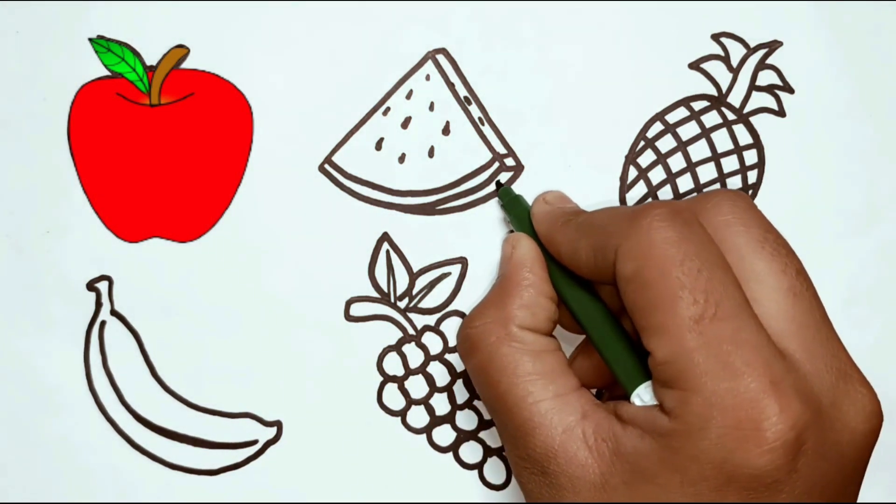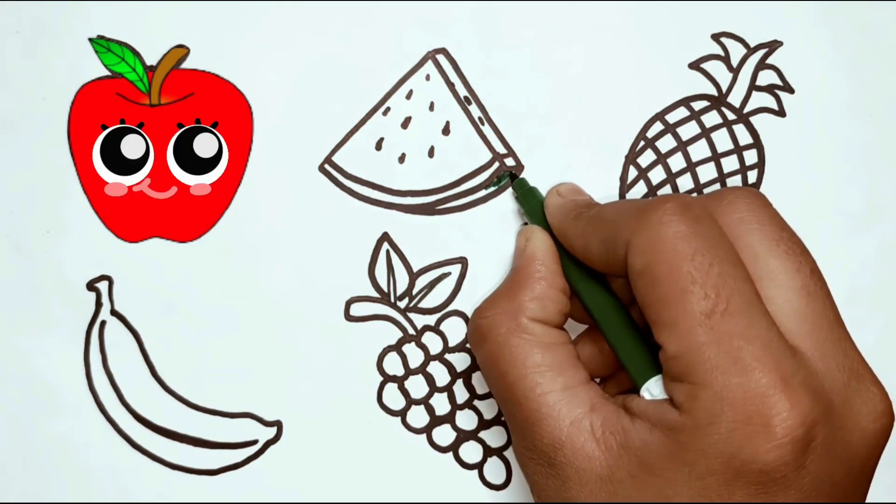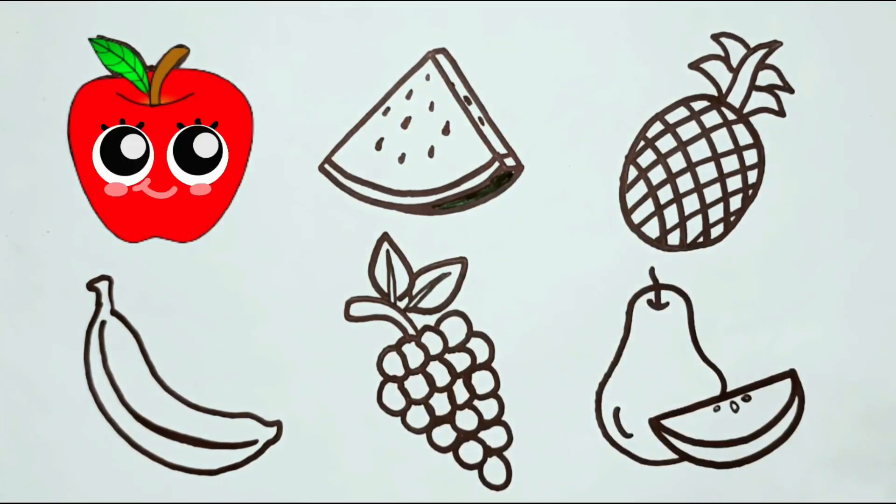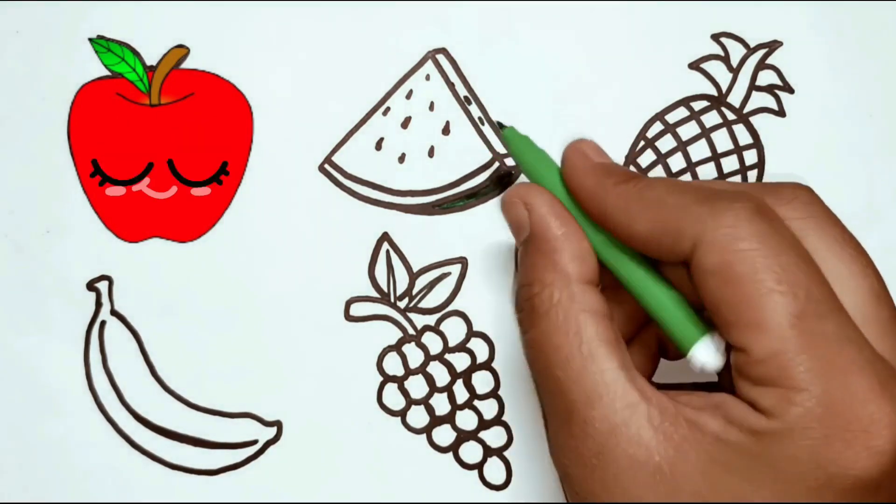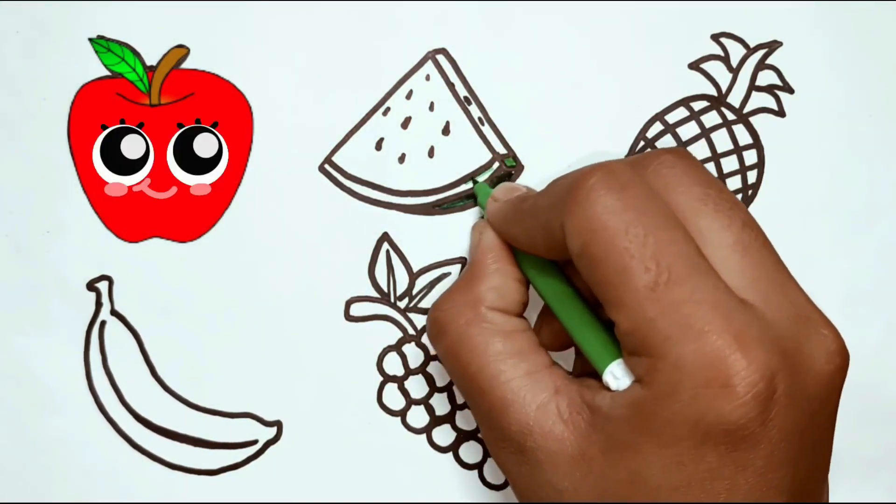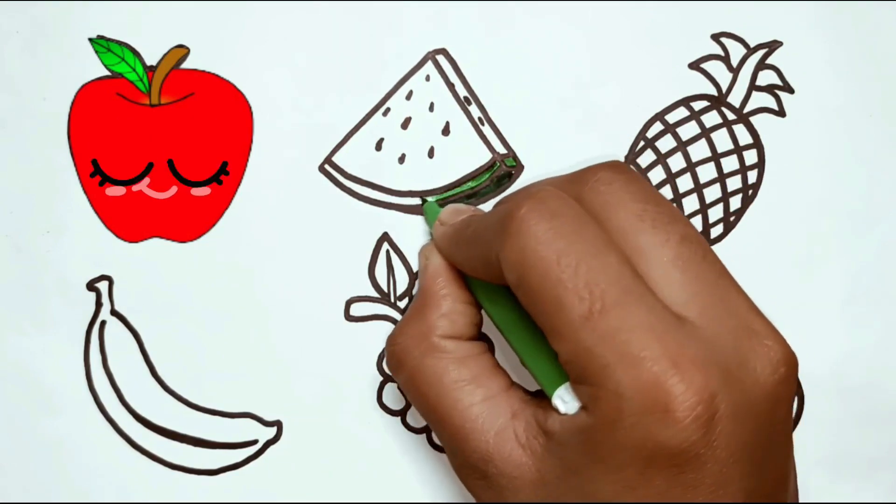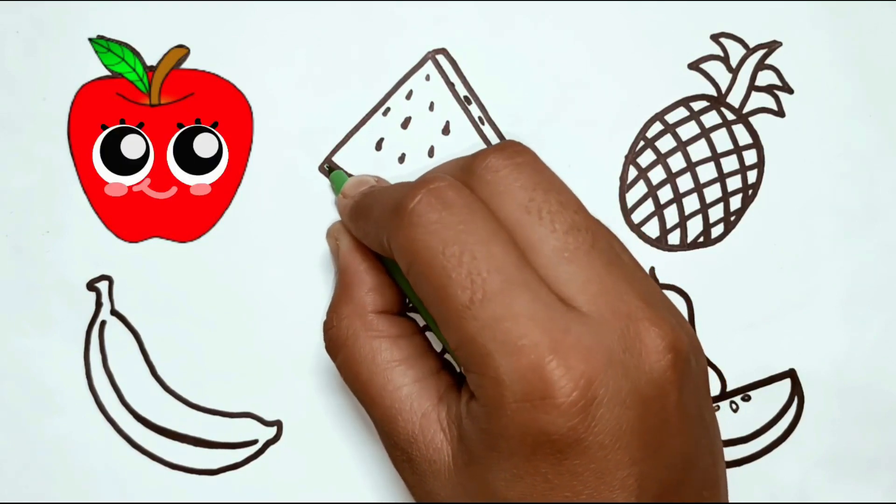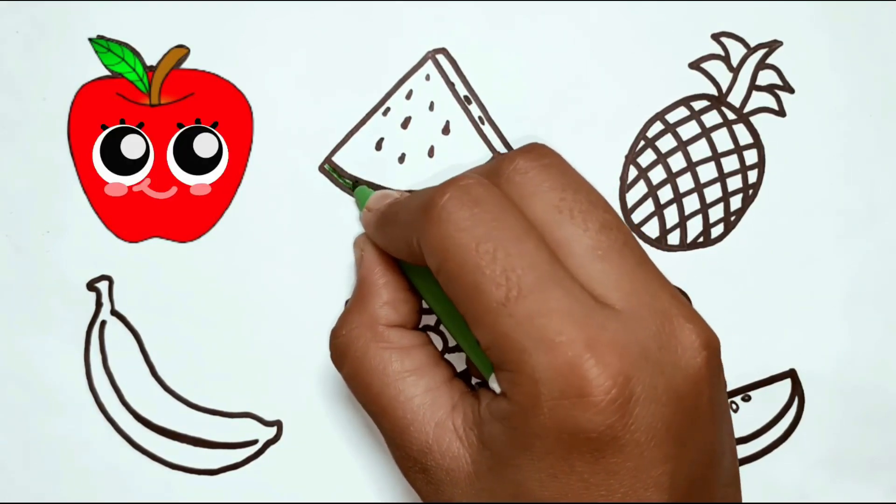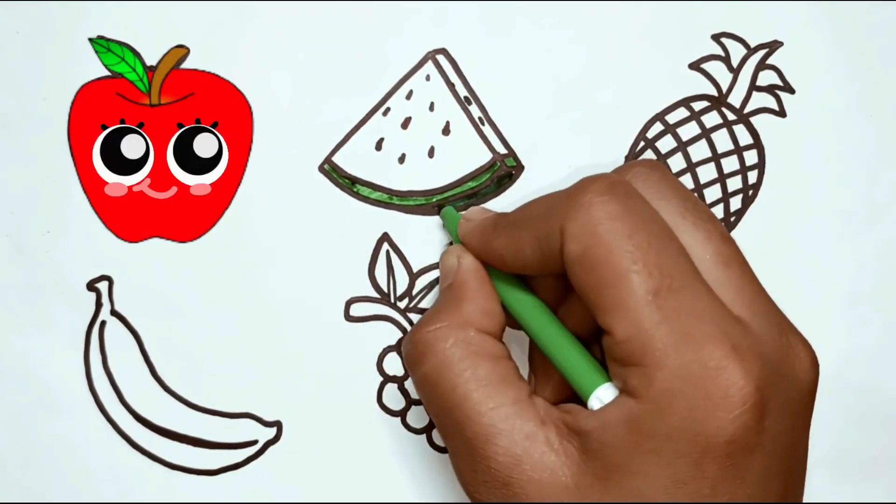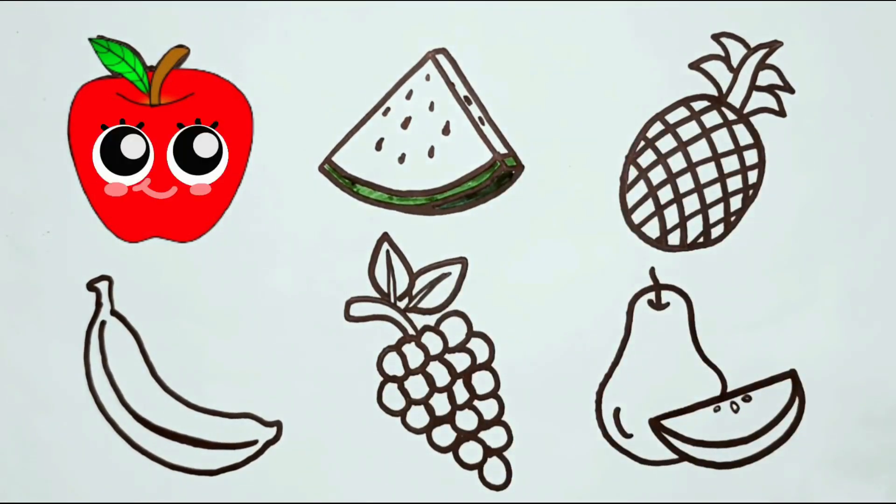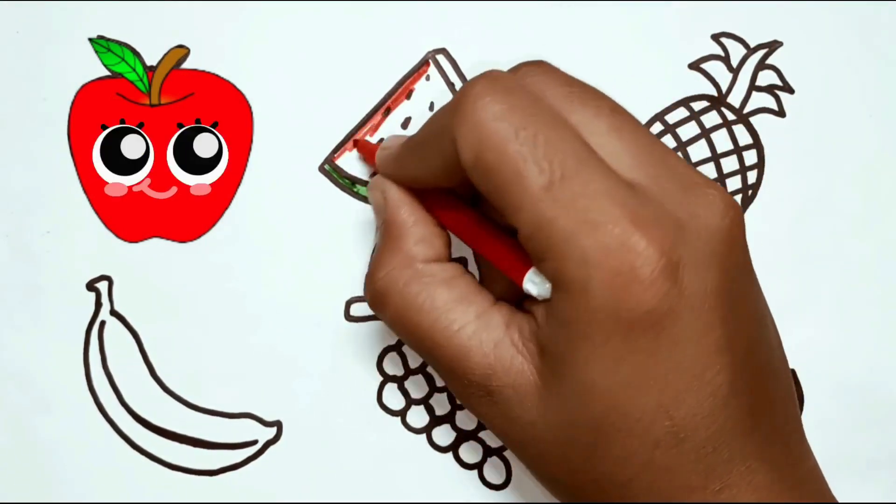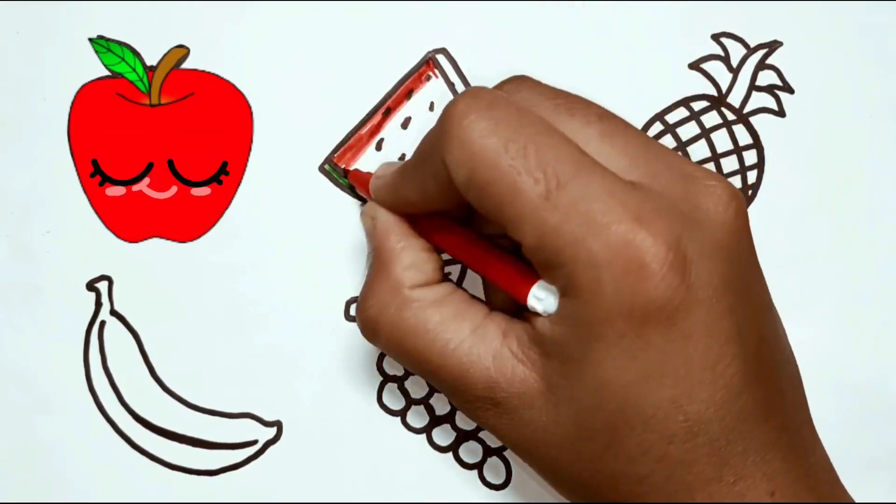What is this fruit? Watermelon. Watermelon is dark green. This is green. Red.